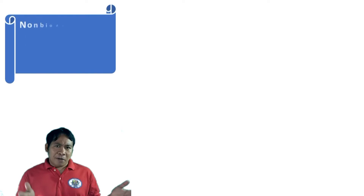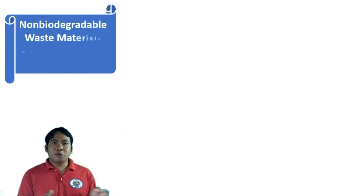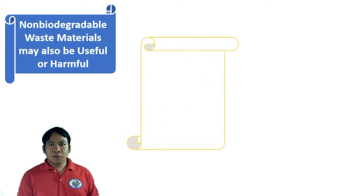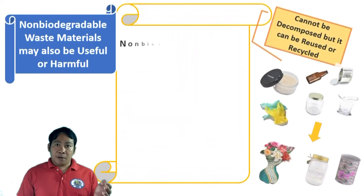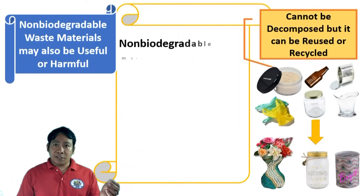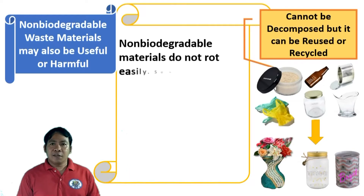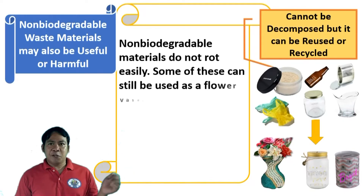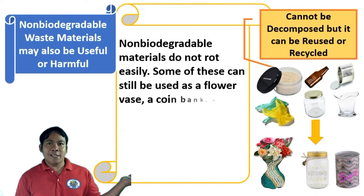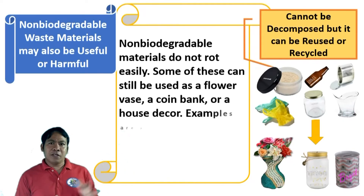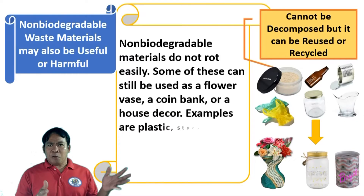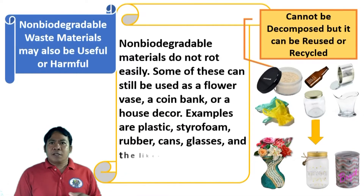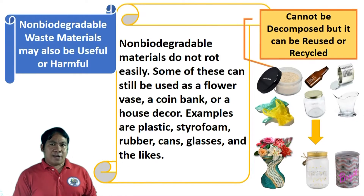Non-biodegradable waste materials may also be useful or harmful. Non-biodegradable waste materials do not break down easily. Some of these can still be used as planters, water tanks, or household items. Examples are plastics, styrofoam, rubber, glass, cans, and metals.